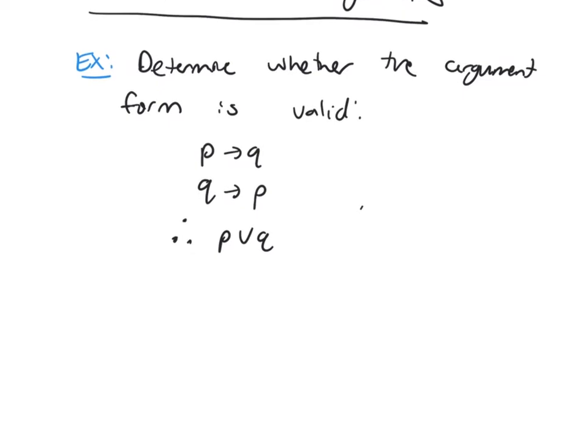How many statement variables do I have? If I look I see I have P and I have Q, so that means I have 2, which means I'm going to have 4 rows in my truth table.